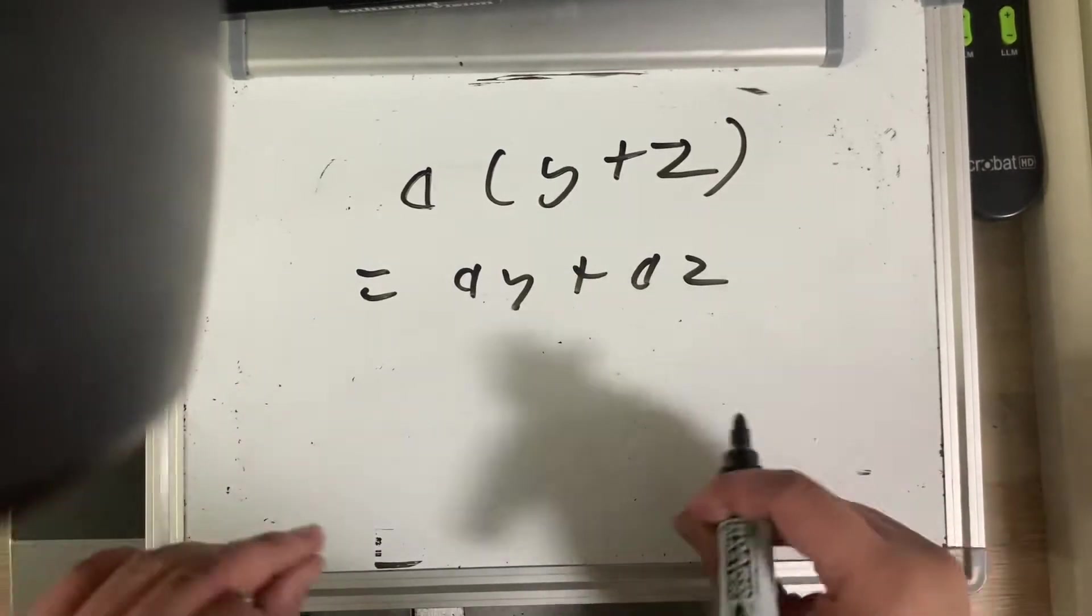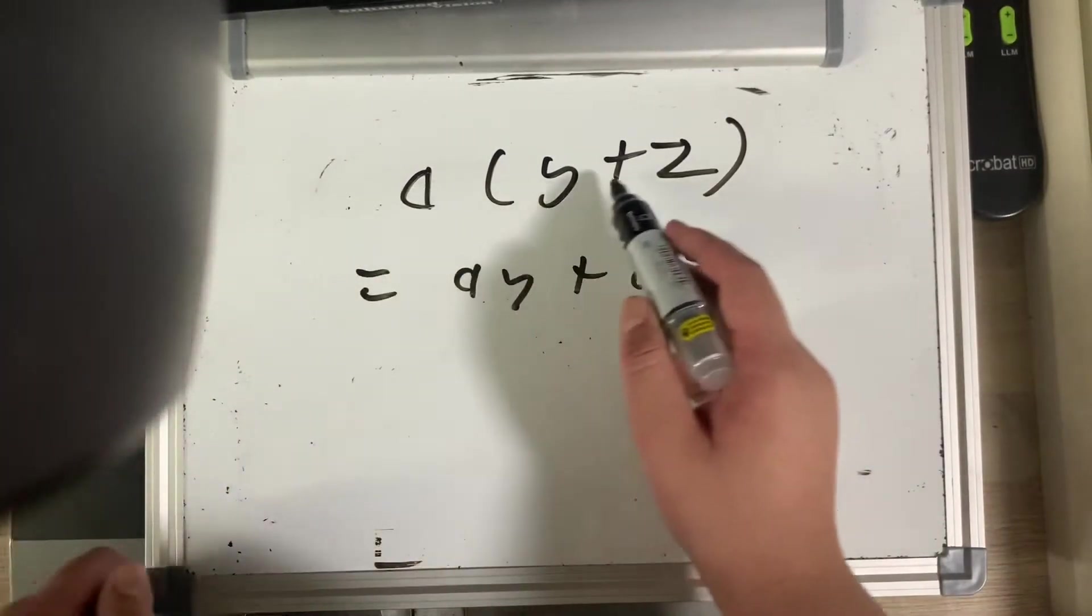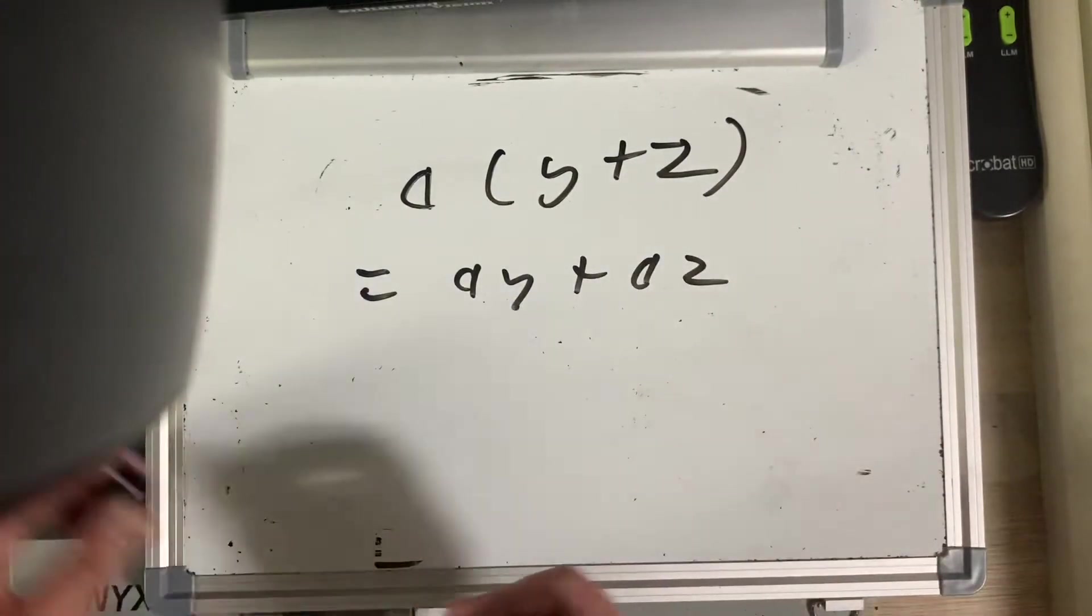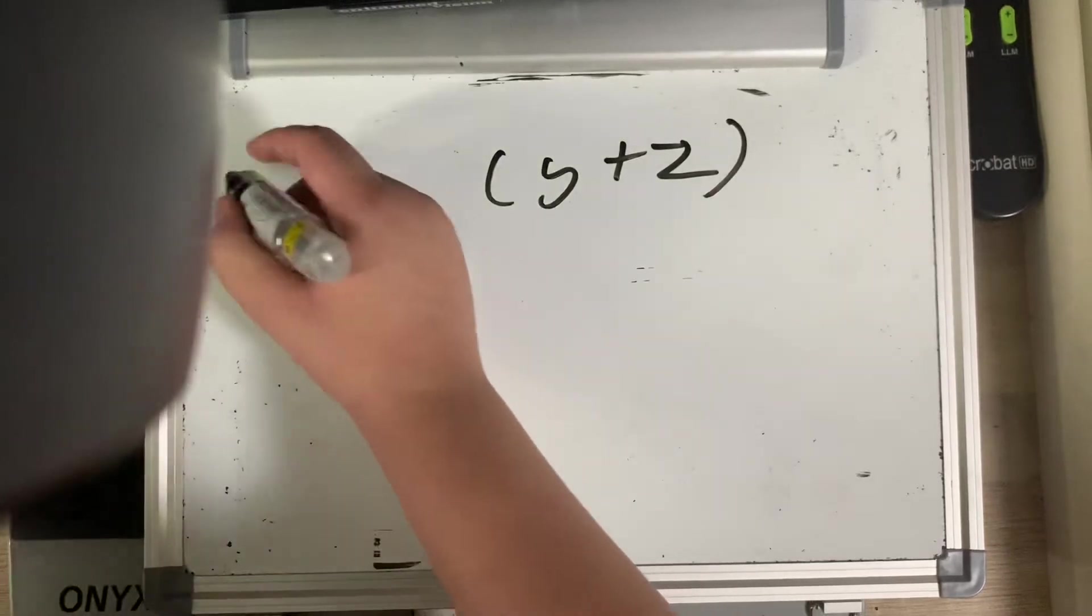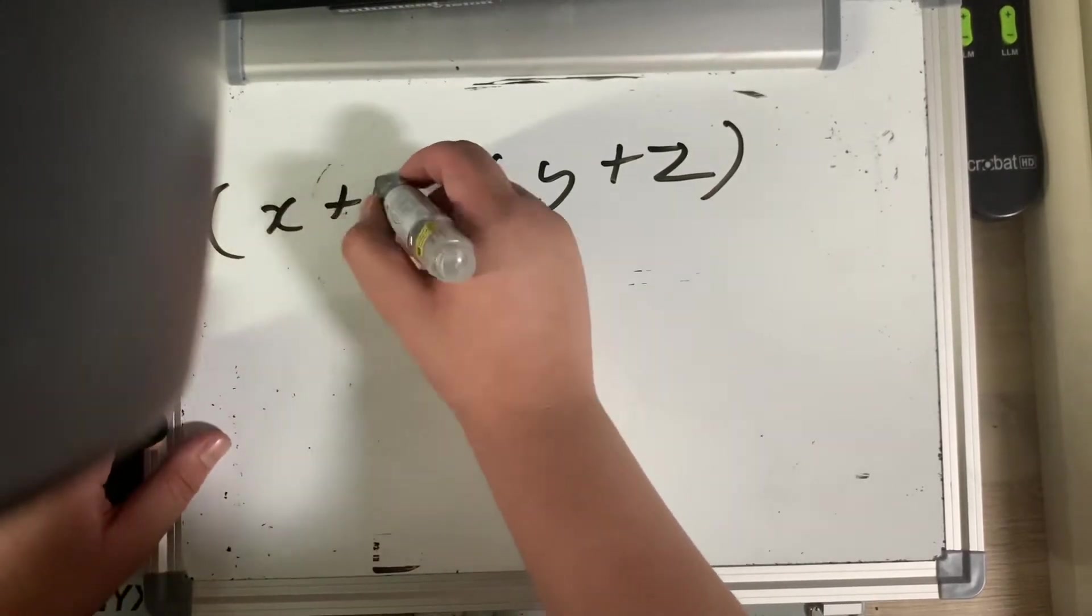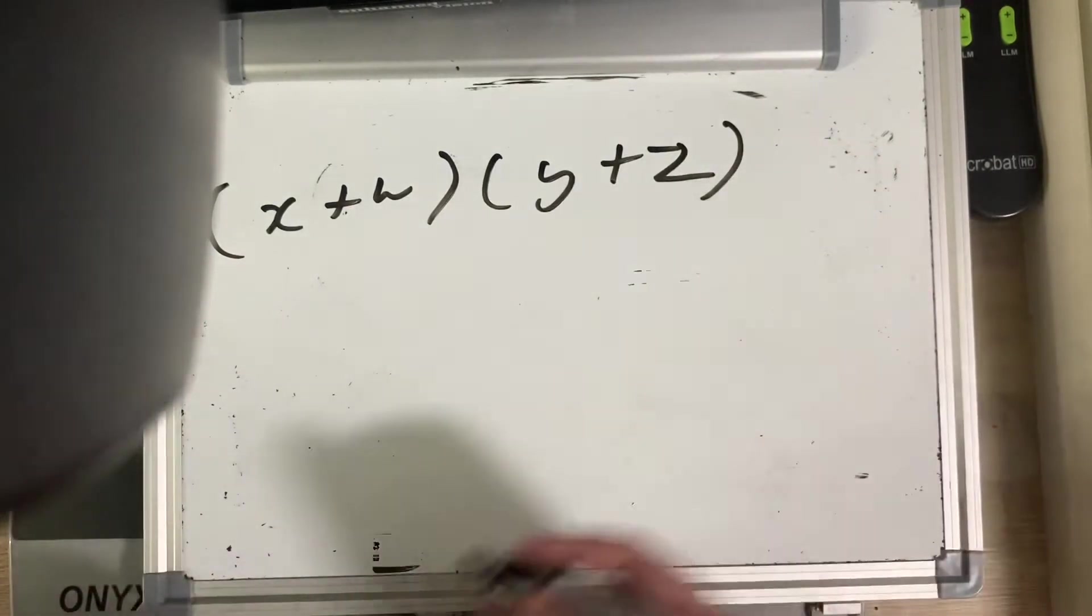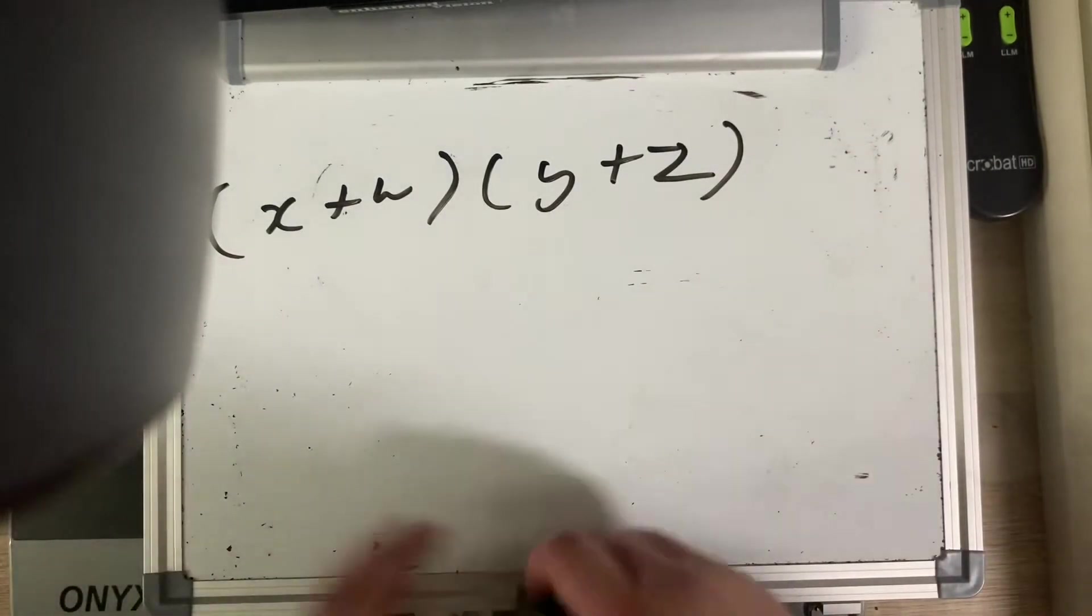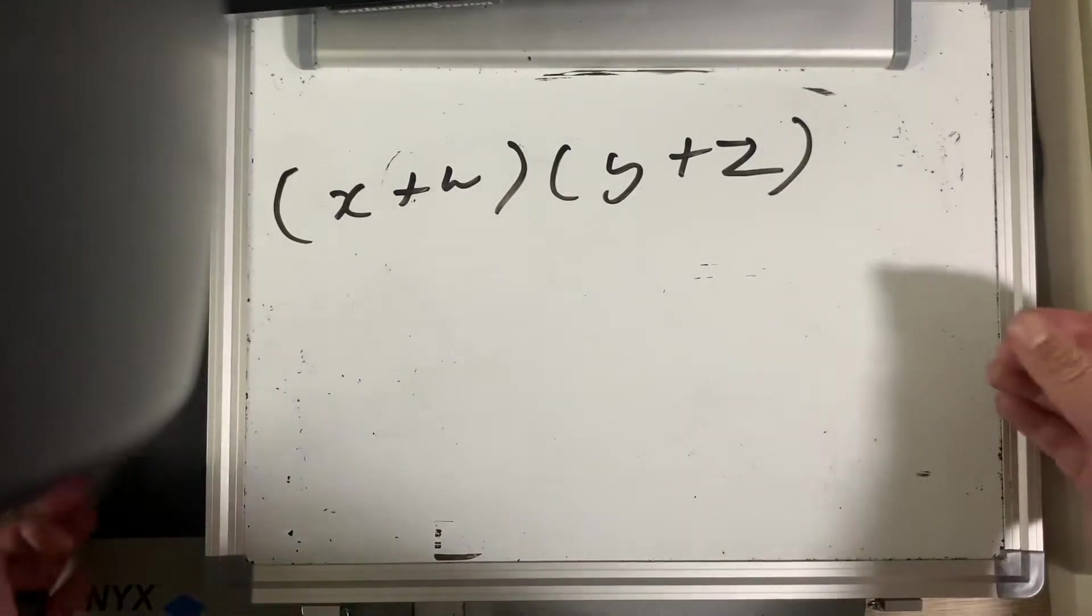But now, I'm going to be focusing on something a bit more complex. This one, you're taking a single value and multiplying it with two terms, pretty standard stuff. But what if you're multiplying two terms with two terms? x plus w times y plus z. Now it's a bit messy, it's a bit complex. How to deal with this?